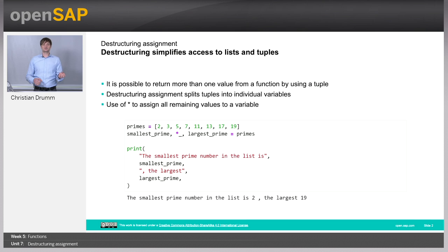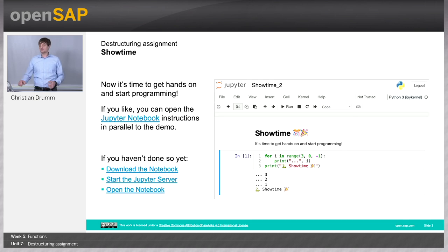So we could just grab the first and the last element of a list and ignore everything else. That's also what is already shown in the small code snippet on the slide. But it's showtime — let's jump over to our Jupyter Notebooks and see how Destructuring Assignment works there.